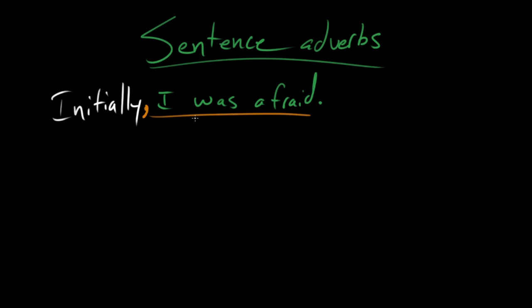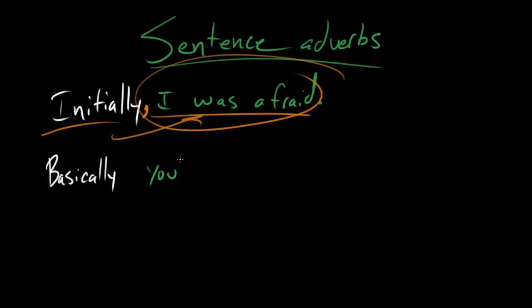Because it's not, this is not the same as saying, I was initially afraid. This is kind of, like you said, modifying the entire expression. Let's look at another example. Basically, you're the greatest. Aw, thanks Paige. So we've got this word basically, and basically is modifying the entire expression. It's kind of qualifying the whole thing. So we're gonna put a comma between this sentence adverb and the sentence itself. Exactly.